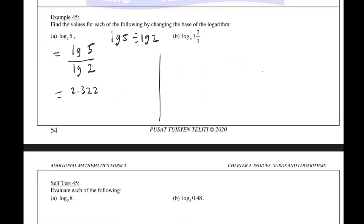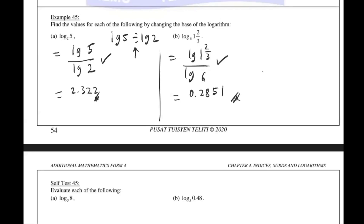For part B, use the change of base formula again. Write LG with 1, 2, 3 on top and LG 6 below. The silver calculator is better because it has the fraction button and shows a natural display. For the silver calculator, typing divide or over gives the same result since you can see the fraction clearly. Type log(1/3) over log 6 and you get approximately 0.2851.